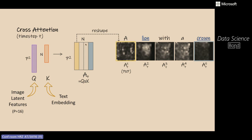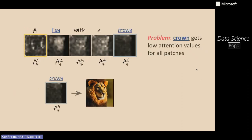Here are the spatial attention maps for 'a lion with a crown.' Lion has high attention values in the middle of the image where it is generated. But for crown — the second subject that should be generated — no high activations appear anywhere in the image. We've pinpointed the problem: the token 'crown' does not get high attention values anywhere in the image, and this is why the crown is not generated while the lion is.